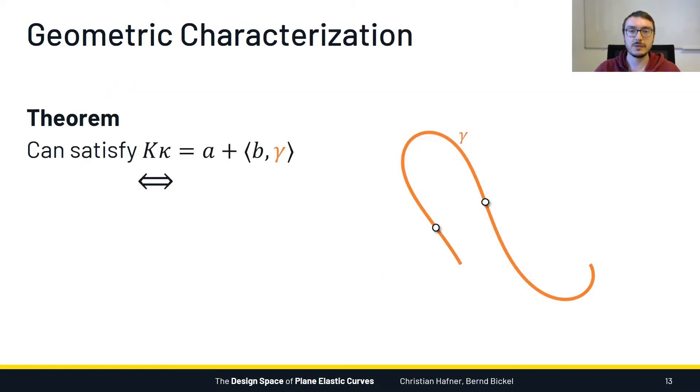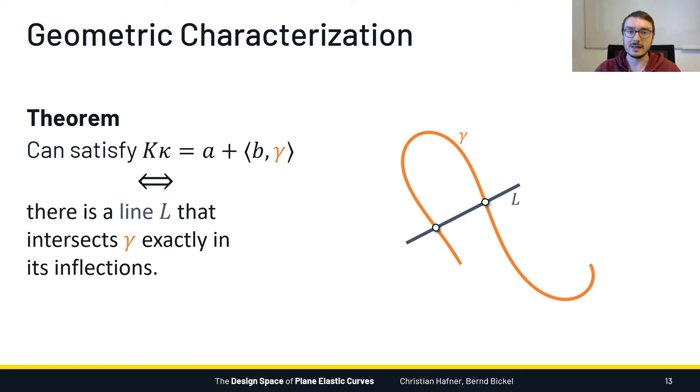And now the main result that we prove in the paper is the following theorem. For a given curve gamma, we can satisfy the moment equilibrium equation with appropriate choices for K, A and B if and only if there exists a line that intersects gamma exactly in its inflection points. There are also a few technical conditions, but for these I refer you to the paper.